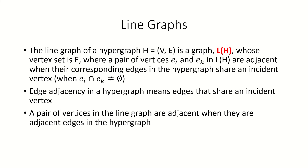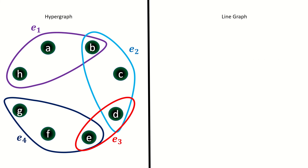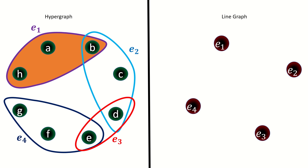As an example, let's find the line graph of this hypergraph. First, find the vertices. Next, link two vertices when the corresponding edges in the hypergraph have a vertex in common. In the hypergraph, edge e_1 shares the vertex b with edge e_2. So in the line graph, vertex e_1 is adjacent to vertex e_2.